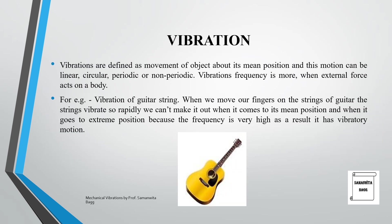Next, vibrations are defined as the movement of an object about its mean position, and this motion can be linear, circular, periodic, or non-periodic. Vibration frequency is higher when an external force acts on the body. For example, when we move our fingers on the strings of a guitar, the strings vibrate so rapidly that we can't distinguish when the string is at its mean position versus its extreme position.